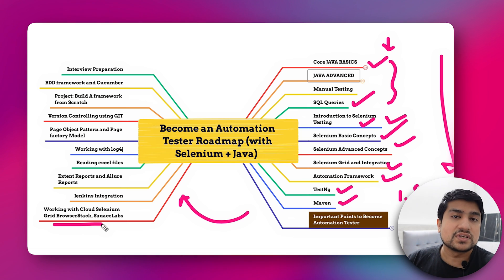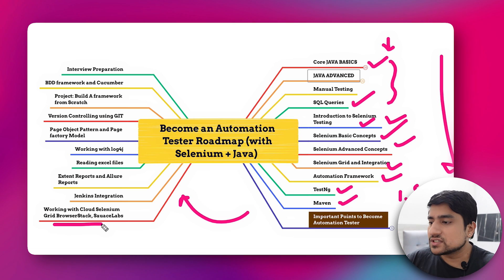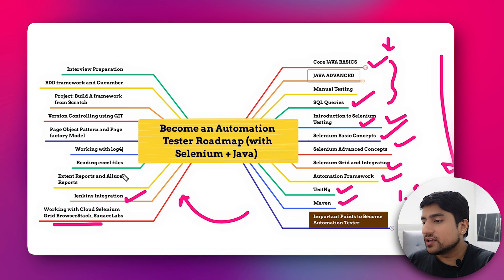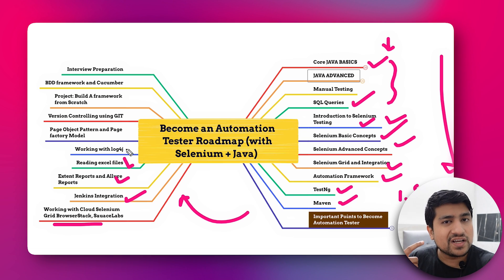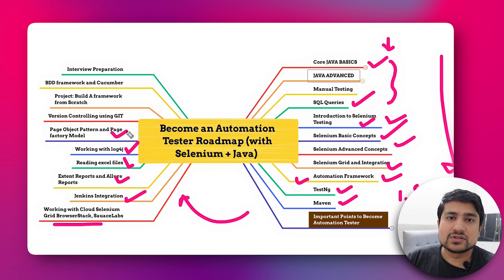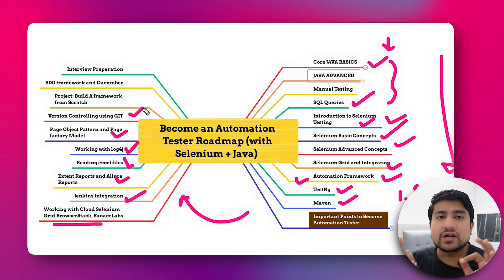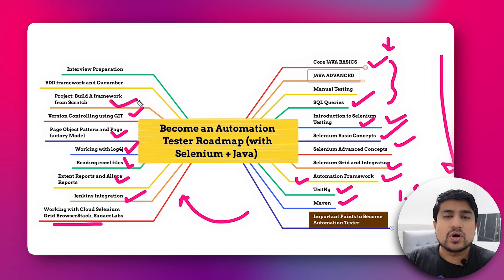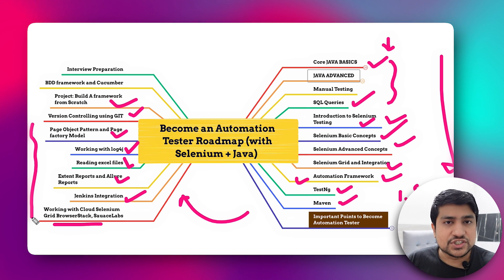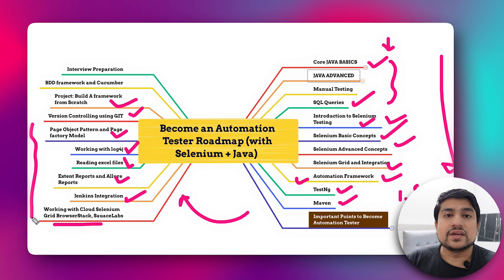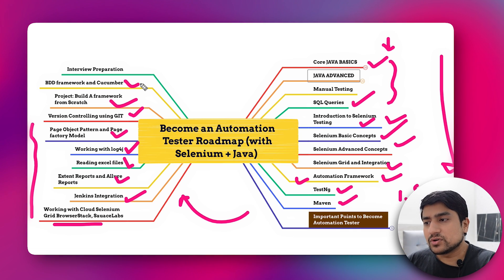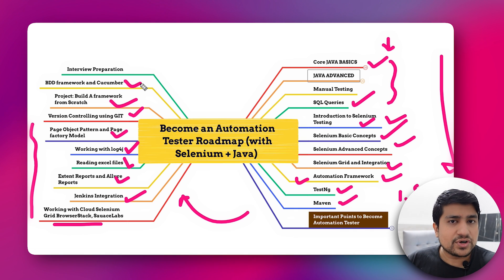Next, learn about cloud infrastructure — most companies now use cloud Selenium grids like BrowserStack and Sauce Labs to scale test cases. You also need to learn CI/CD tools like Jenkins for automating build execution, plus utilities like reporting, Excel file handling, and Log4j. Learn the Page Object Pattern for your automation framework, and Git as part of the CI/CD pipeline. Finally, build your own framework from scratch for confidence. At this point, roughly two and a half months have passed at one hour a day.